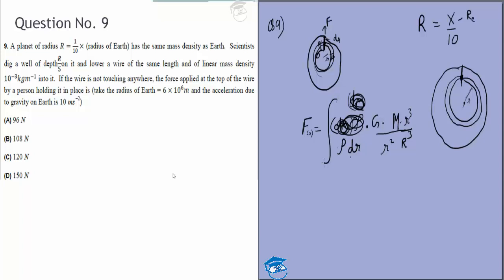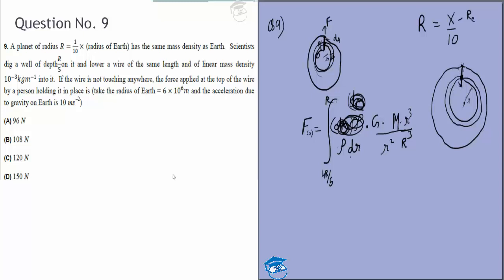We need to put in dm as well. This should have been dm, and dm will be replaced by ρ dr - ρ is the linear mass density, dr is the length. We integrate from 4r by 5 to r, from this point to this point.